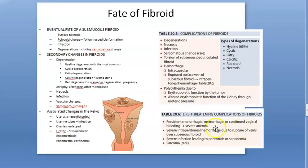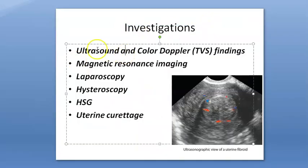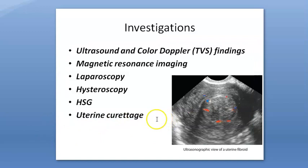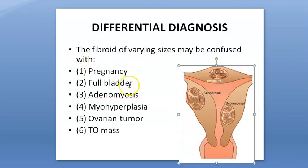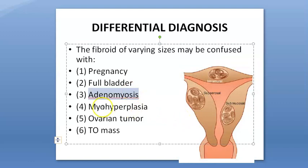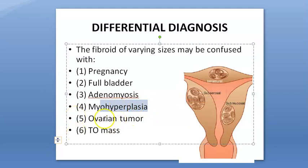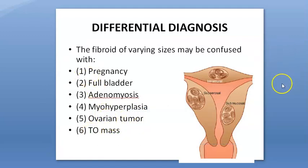After fate of fibroid, we need to look at investigations: ultrasound, MRI, laparoscopy, hysteroscopy, hysterosalpingography, X-ray with contrast, and uterine curettage to check the endometrium. Differential diagnosis for a fibroid includes pregnancy, full bladder, adenomyosis, myohyperplasia (hyperplasia of the myometrium), ovarian tumor, or tubo-ovarian mass.